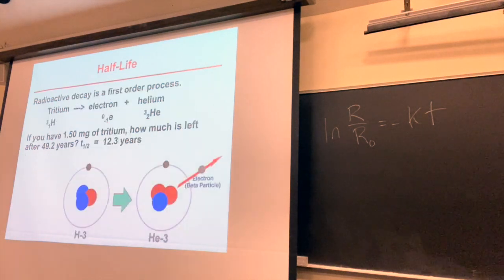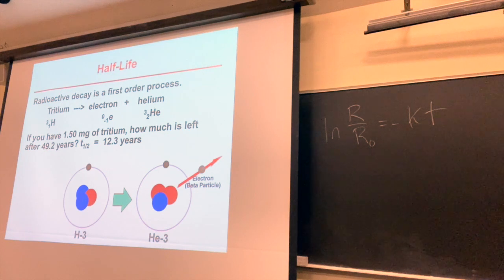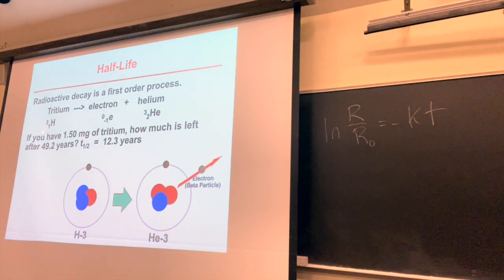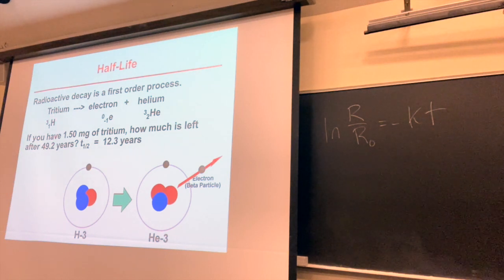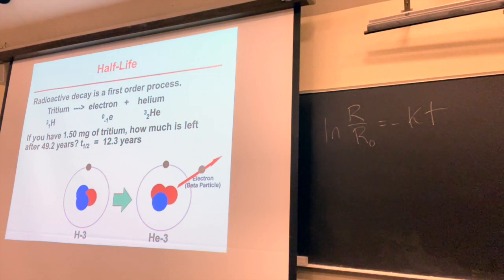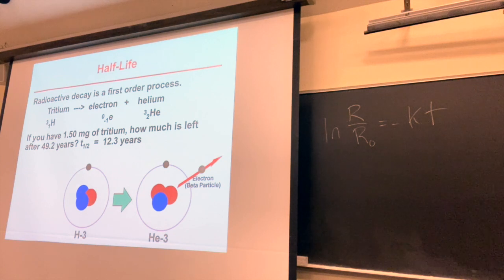Half-life is really important when it comes to nuclear chemistry. Hydrogen has three isotopes. Hydrogen is number one on the periodic table; the atomic number is in the lower left and all hydrogen has one proton. The mass number — protons plus neutrons — is in the upper left. Tritium has two neutrons and is a very unstable isotope. Some of the water we drink has a little bit of tritium in it. Tritium breaks down into helium-3 and releases an electron.